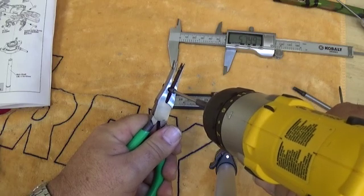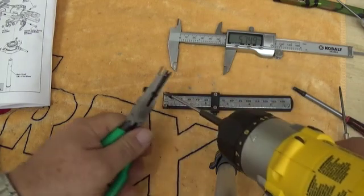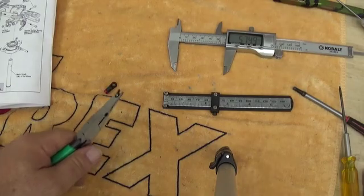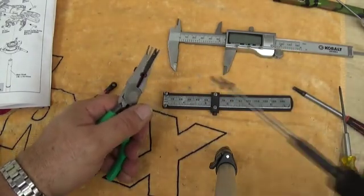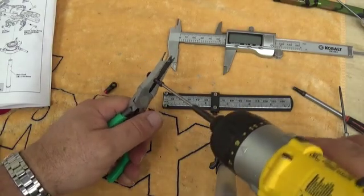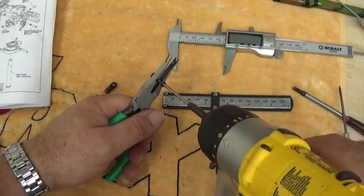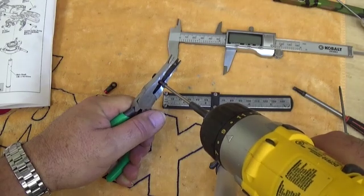What that did is essentially cut some threads into that link. I'm going to repeat this for the other link and we'll go ahead and put one together. The key here is not to go too fast and overheat this because you can generate a lot of heat in a quick amount of time. I'm going to take this nice and slow.